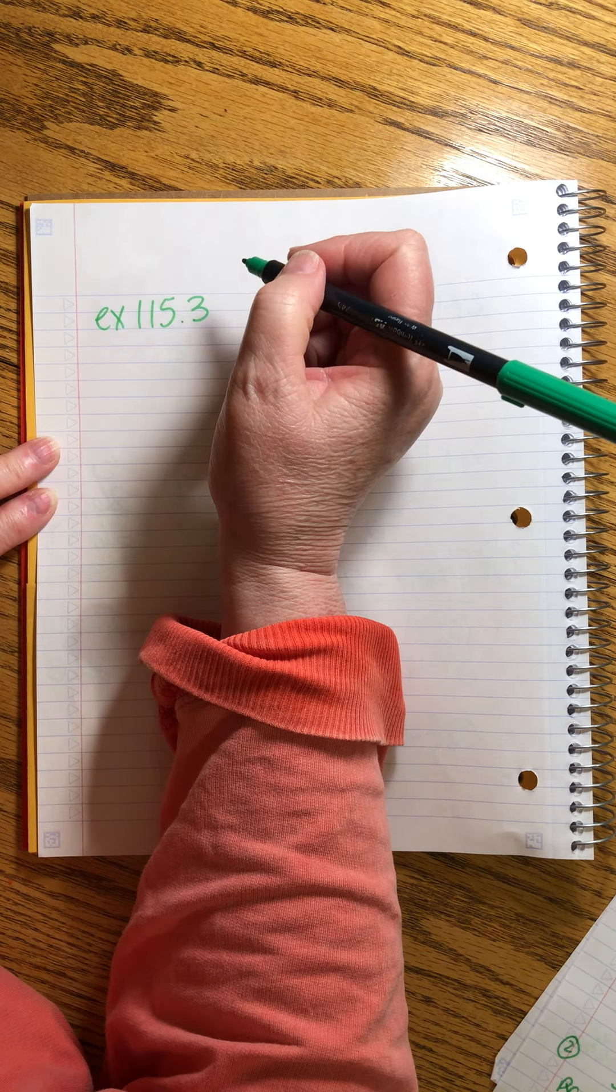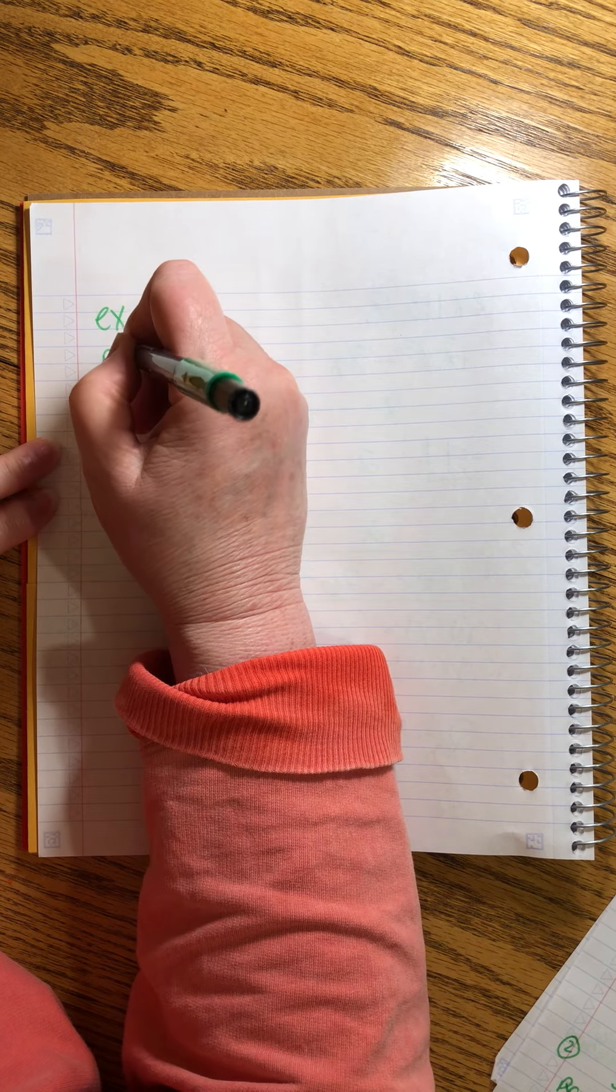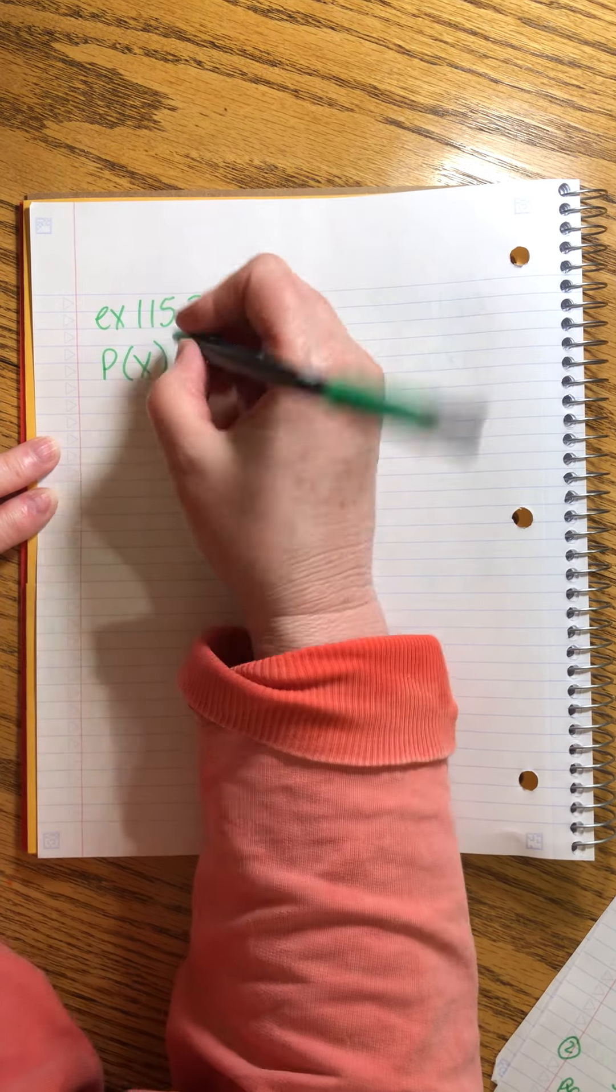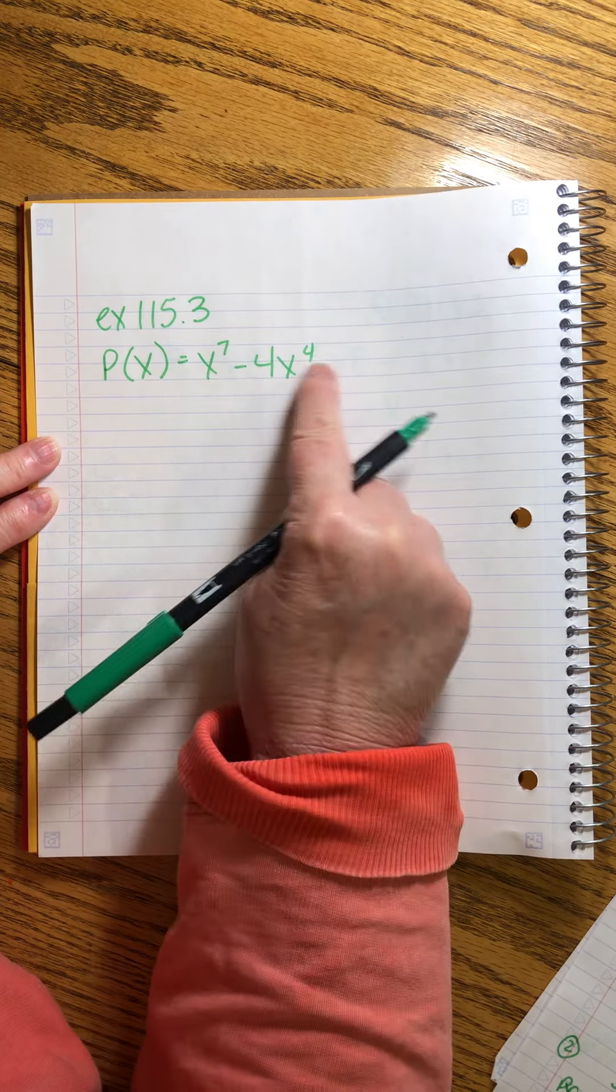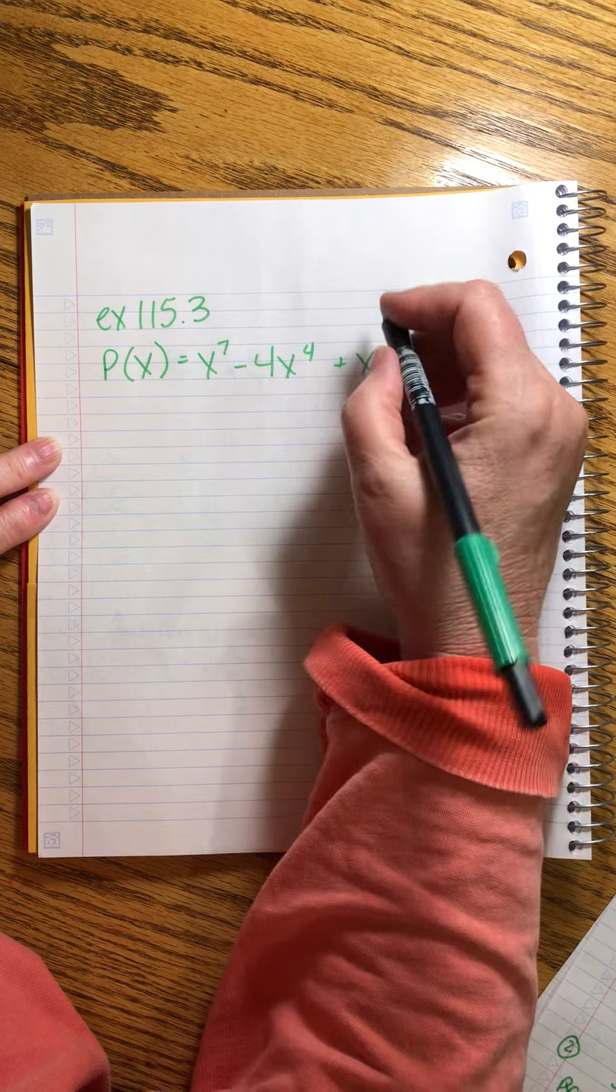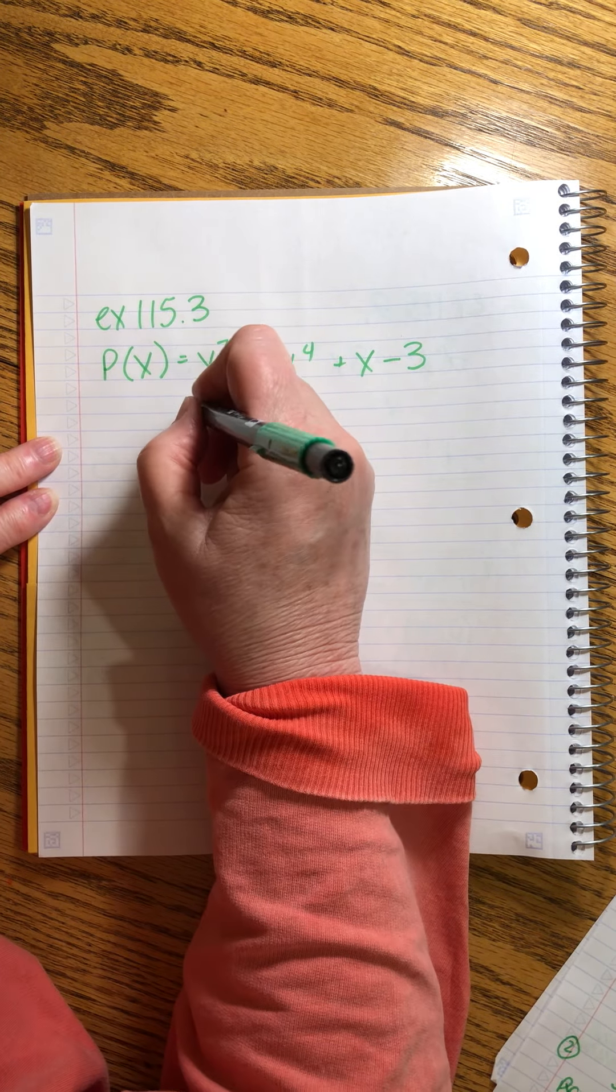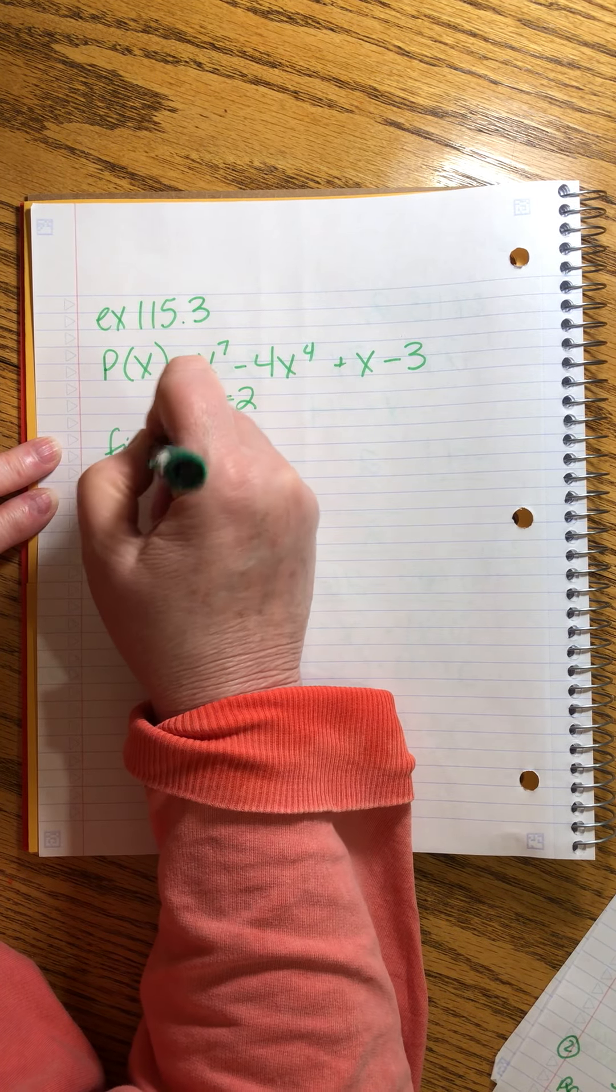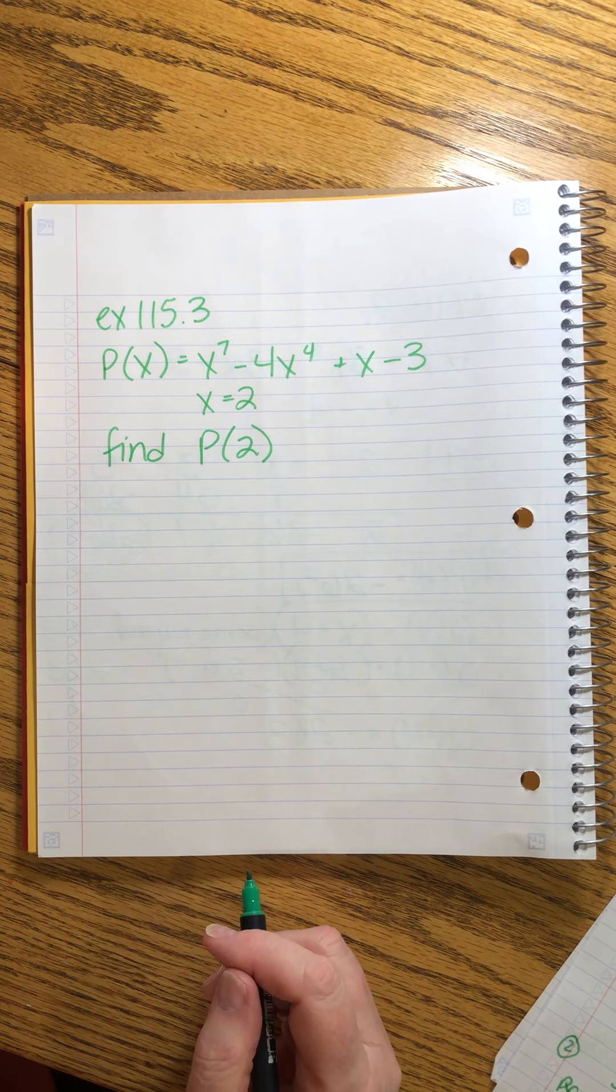115.3. Use the remainder theorem to evaluate, and I'm going to put P(x) in front of that. This is the polynomial form. x^7 - 4x^4. Ooh, big skip there, right, from the 7th to the 4th, plus x. Ooh, another big jump. Minus 3. And we want to evaluate it when x equals 2. So we want to find the P(2).